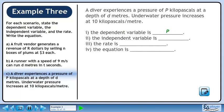The dependent variable is P. The independent variable is d. The rate is 10 kilopascals per meter.